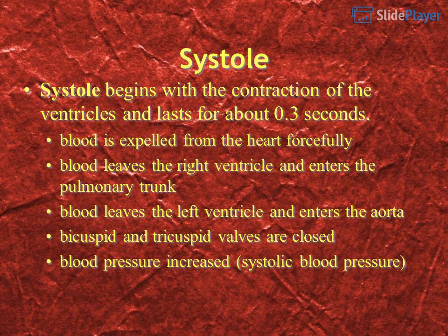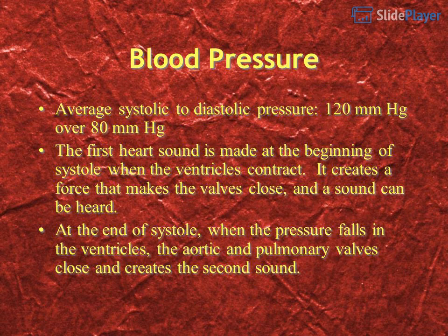Systole begins with the contraction of the ventricles and lasts for about 0.3 seconds. Blood is expelled from the heart forcefully. Blood leaves the right ventricle and enters the pulmonary trunk; blood leaves the left ventricle and enters the aorta. The bicuspid and tricuspid valves are closed. Blood pressure is increased — this is systolic blood pressure. Average blood pressure is 120 mmHg over 80 mmHg.